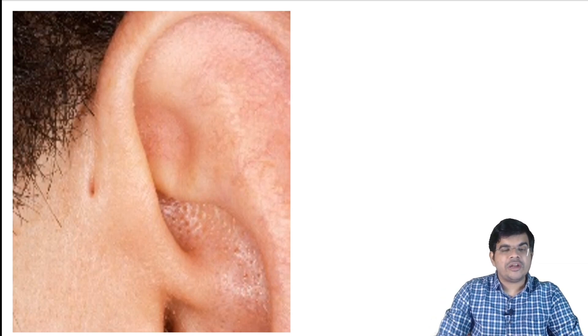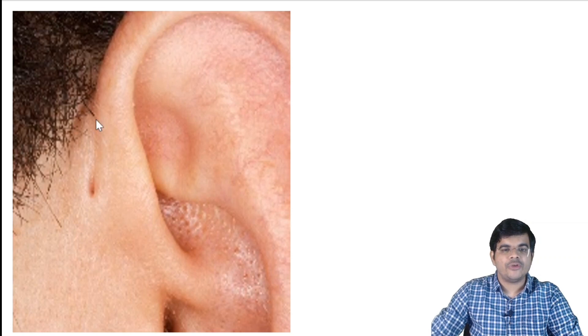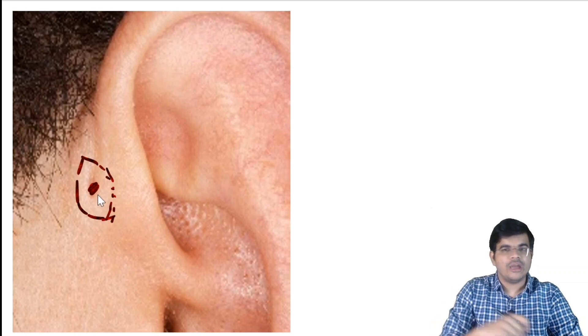The definitive treatment of preauricular sinus is surgical excision of the whole sinus tract. And for that, you will have to inject methylene blue dye into the sinus through the opening. And then an elliptical incision is put around the sinus and the whole sinus tract is excised as delineated by the methylene blue dye.